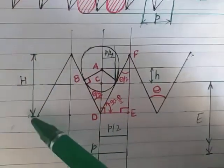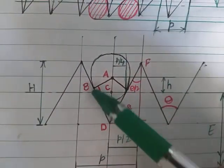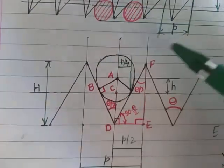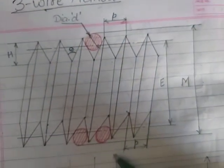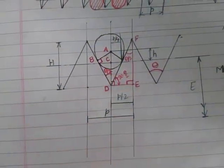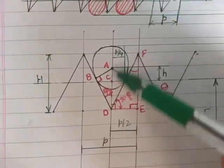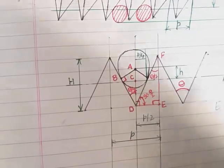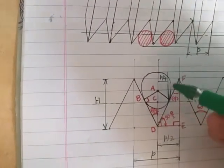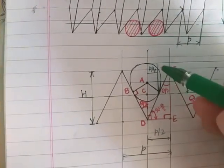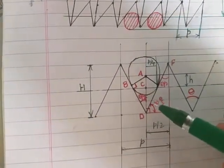Zooming into the main diagram: over the thread profile we have inserted this wire of diameter small d, so the radius will be small r. From one point to the next, this distance is your pitch p — the distance between two consecutive threads at the same point. This pitch is divided into two parts at the center: this is p by 2, half of the pitch. At the point of effective diameter, this distance will be your p by 4.